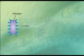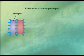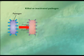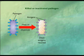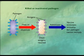Vaccines are produced in a variety of ways. One traditional approach is to use a pathogen that has been killed or inactivated with heat or chemicals. Because the pathogen cannot multiply, there may not be enough antigens present to stimulate a strong or lasting immune response.